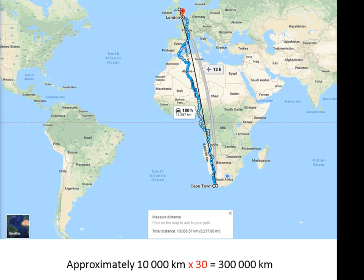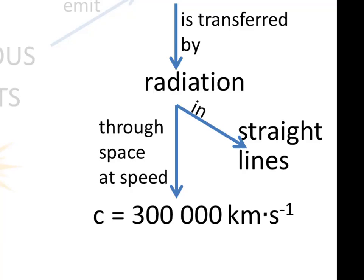Which means 30 times 10,000, 300,000 kilometres. That light would travel back and forth those 30 times in only one second. So that tells us light travels very quickly.